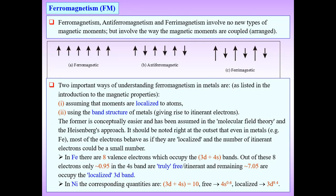In anti-ferromagnetic materials, something different occurs. Some moments are aligned in one direction and some are aligned in the opposite direction. Due to this phenomenon we get anti-ferromagnetic materials, where one set of moments points in one direction and another set points in the opposite direction.